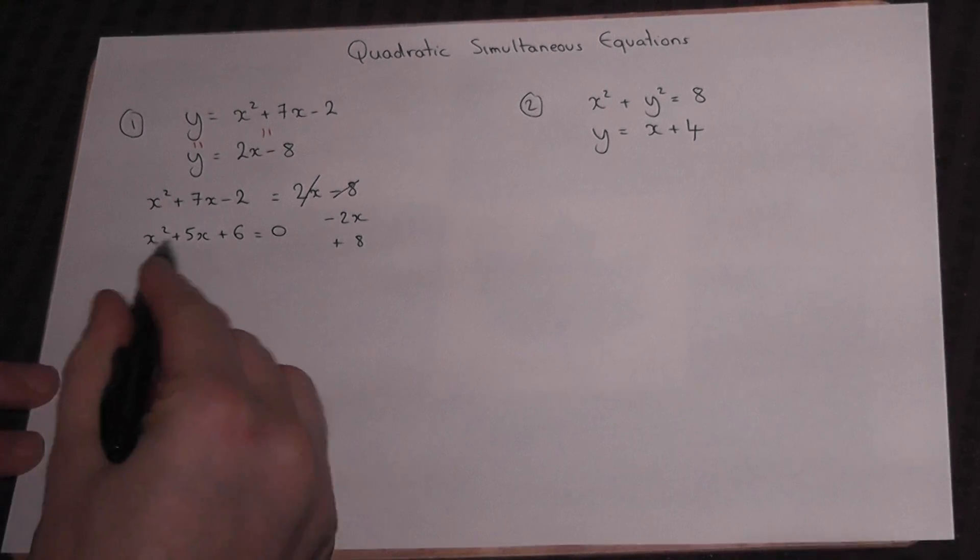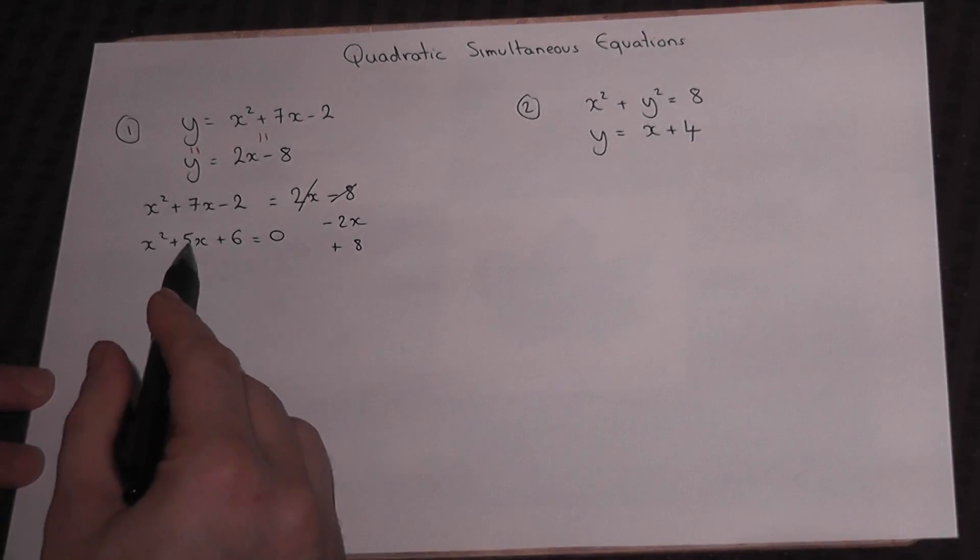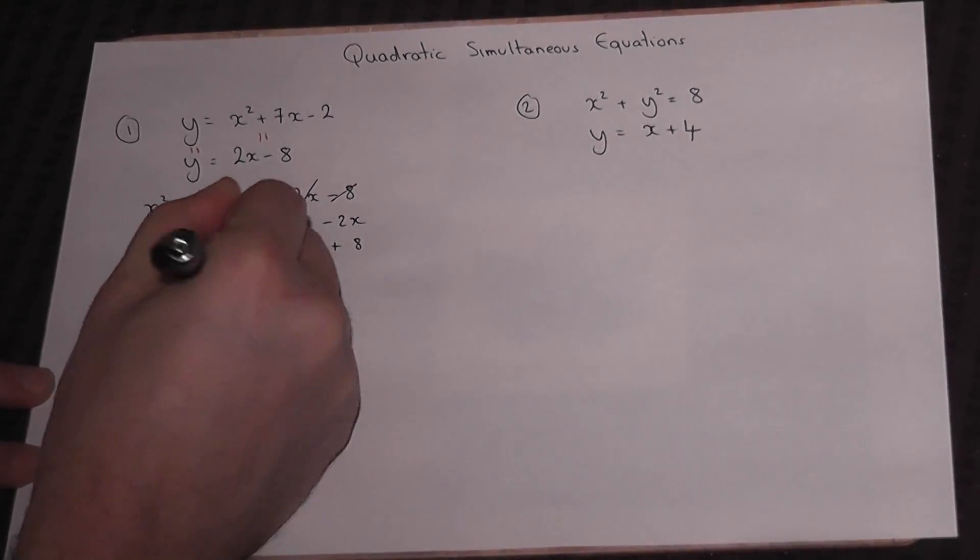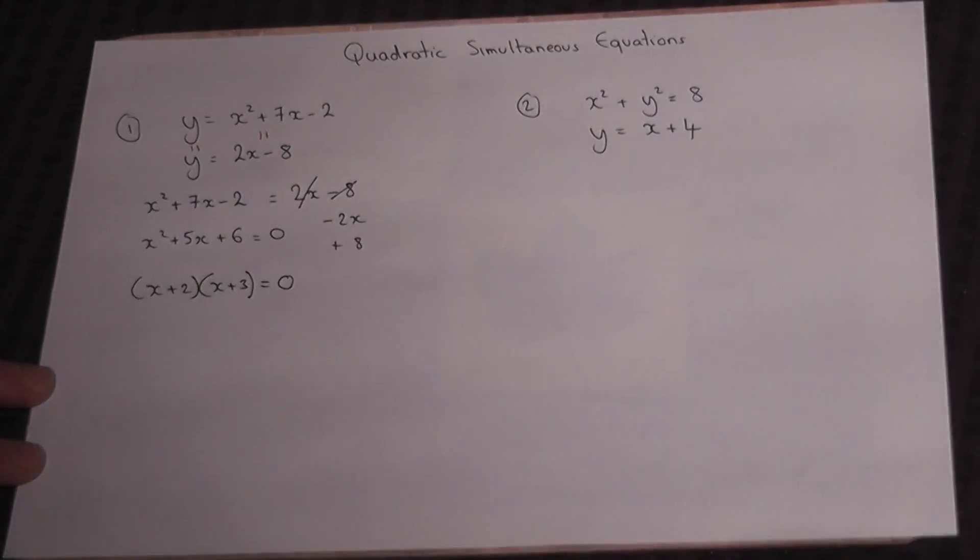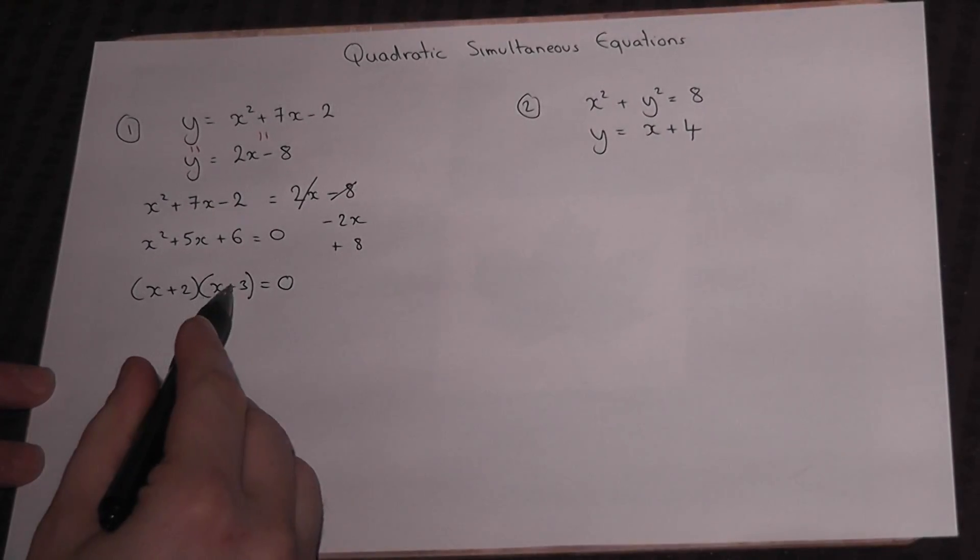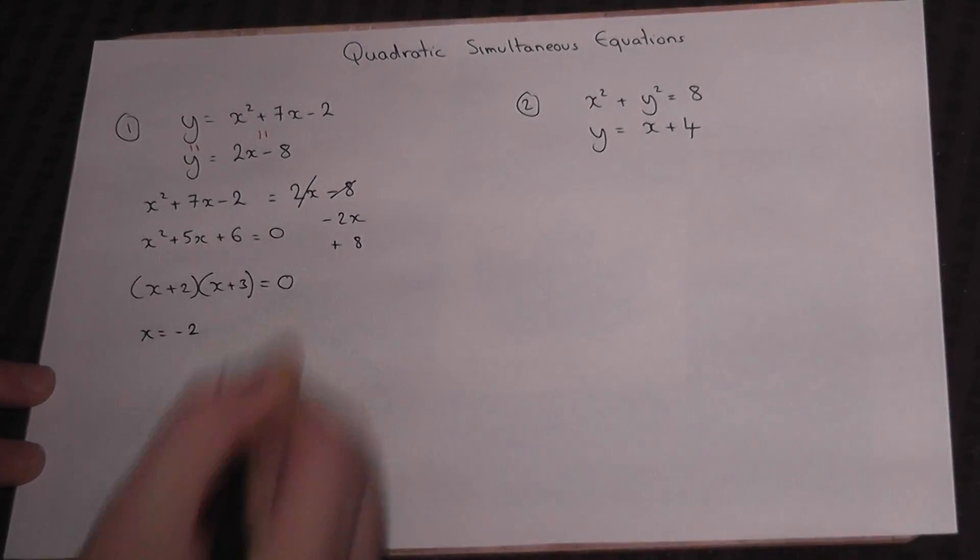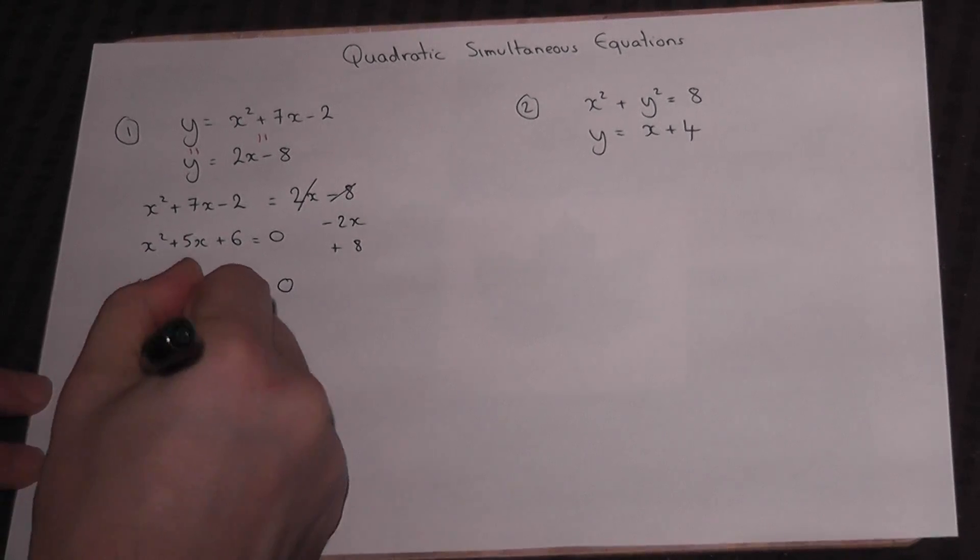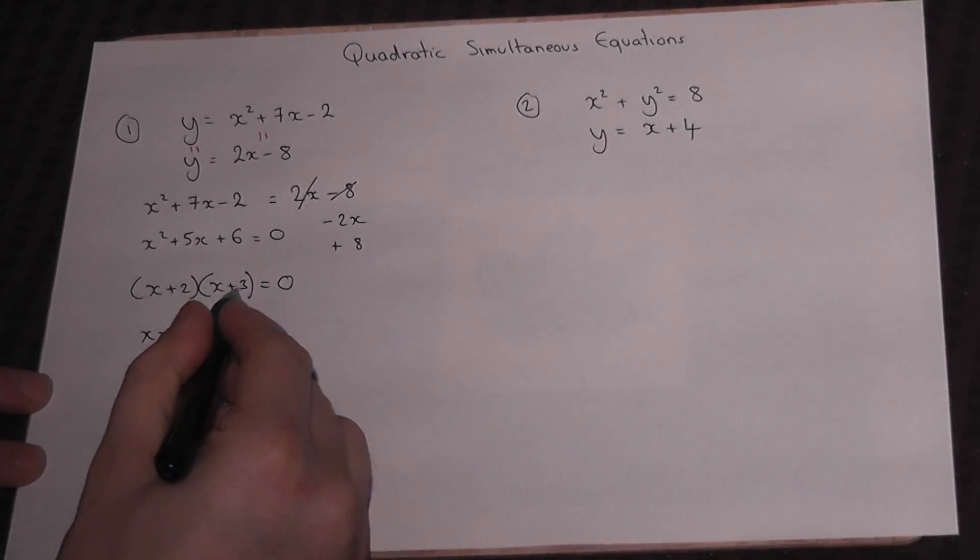This becomes quite a simple equation to solve because it factorizes. 2 times 3 is 6 and 2 plus 3 is 5. So we're left with (x + 2)(x + 3) = 0. So either x equals minus 2 or x must equal minus 3.